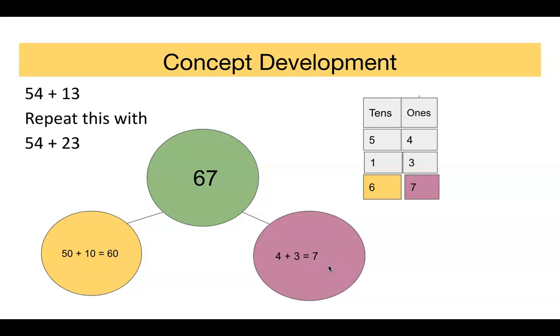Now if your students are still unclear or still need more practice, you can do it with 54 and 23, constantly doing the scaffolding with the place value chart and the number bonds.